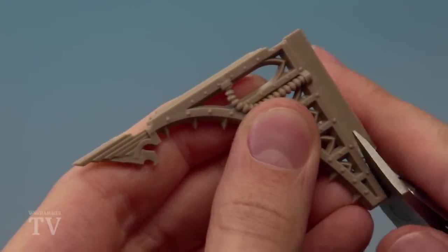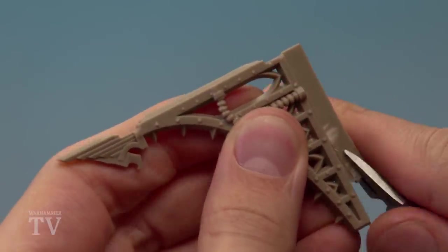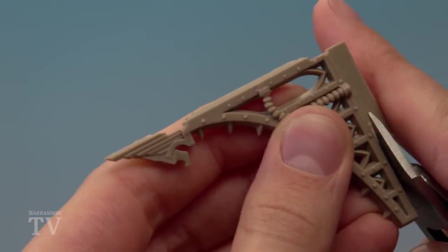So what I'm going to do now is do this on both parts and use the mold line remover just to score it nice and smooth along the top, and then I'll glue them into place.